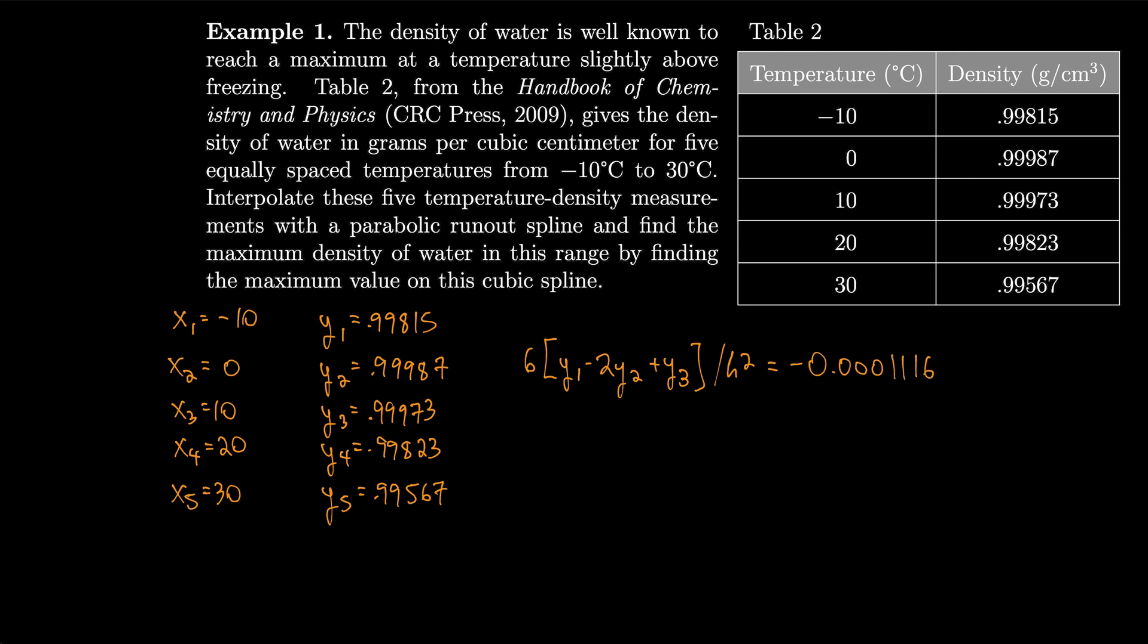Let's do the same thing for the next one with y2. So that's (y2 minus 2y3 plus y4) divided by h squared. Remember, h is the distance between the x values. So that's -0.000816. And then let's do 6 times (y3 minus 2y4 plus y5), divide by h squared and we get -0.000636.